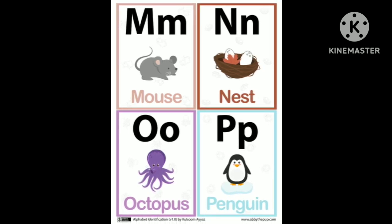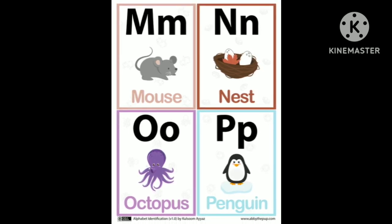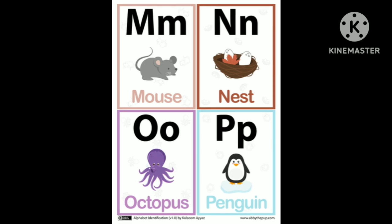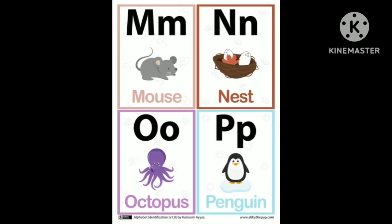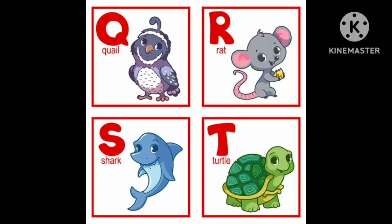P is for penguin, Q is for wild, R is for rat,